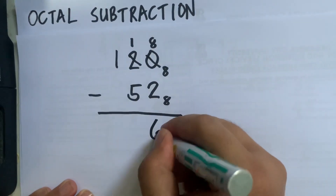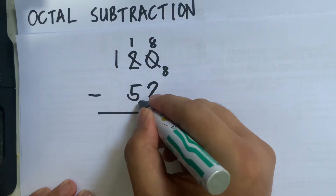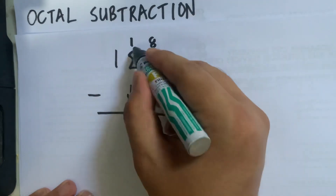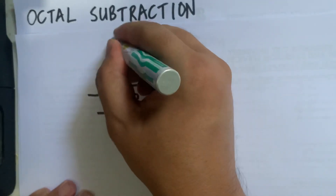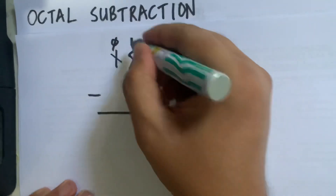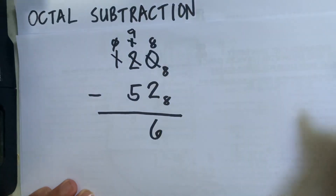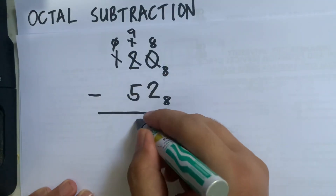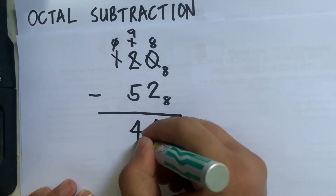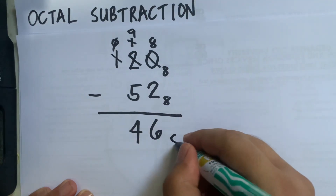So 8 minus 2 is 6. Then 1 minus 5 — cannot be done — so 1 will borrow 1 from 1, making that 1 become 0, and 1 here becomes 9. Then 9 minus 5 is 4, so the answer is 46.